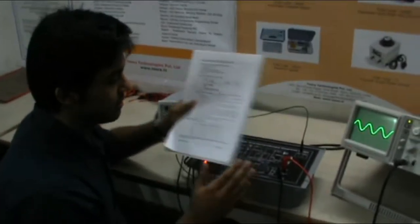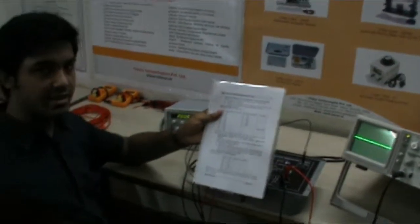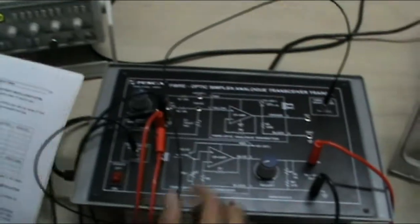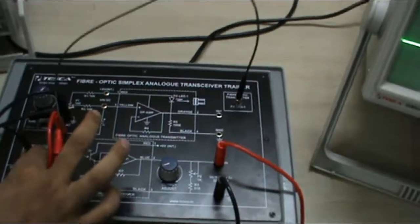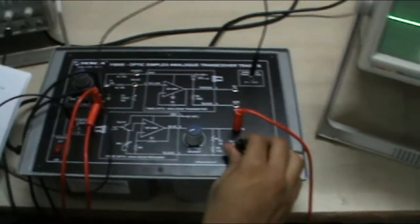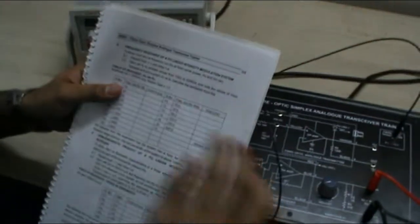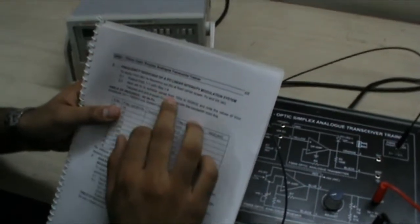That's it in the first experiment. Now the second experiment, this is the frequency response of a FO linear intensity modulation system. In this, initially we have to repeat the steps of experiment 1 till 1.4 as given in the manual. That means connect this optic fiber cable from this point to this point, give 2kHz 100mV peak to peak input over here and the output connected to channel 2 of CRO as we have already done. Now in this set FO suitable values from 10hz to 500kHz.